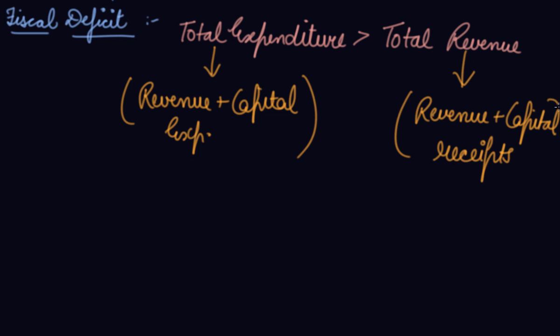Or you can also call them as the Total Receipts. So, your Fiscal Deficit (FD) is equal to Total or Budget Expenditure